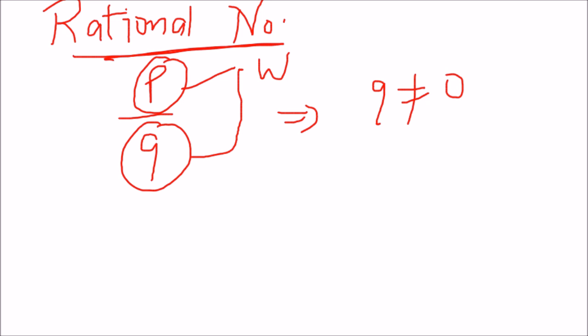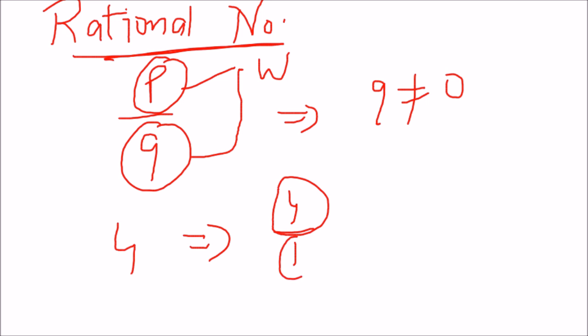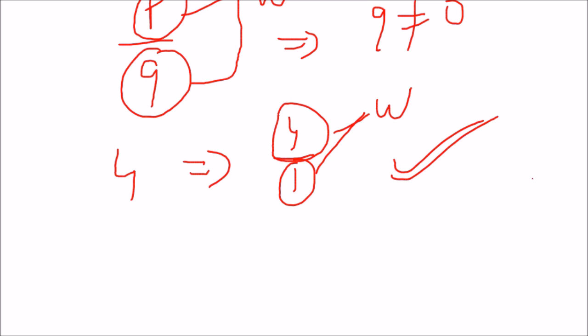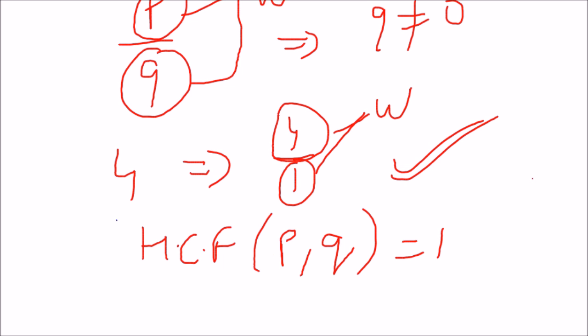Now if I ask you: is the number 4 a rational number? The answer would be yes, because it can be written as a ratio — that is, 4 upon 1 — where both the numerator 4 and the denominator 1 are whole numbers. So 4 is a rational number. One more thing to note: in the case of rational numbers, the HCF — the highest common factor — should be 1.